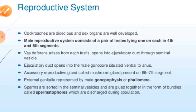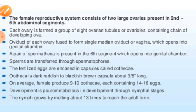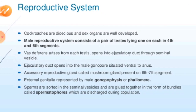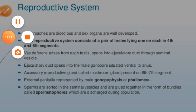The cockroach is a dioecious animal — both sexes have separately developed reproductive organs. These organisms have developed both male and female sexes separately. We will first talk about the male reproductive system in the cockroach.